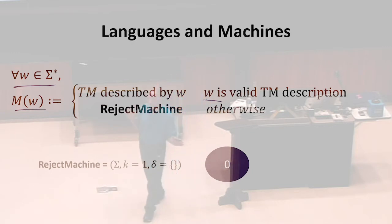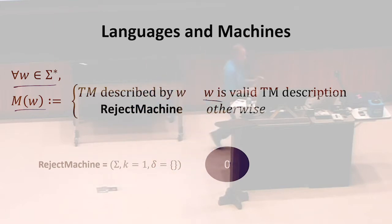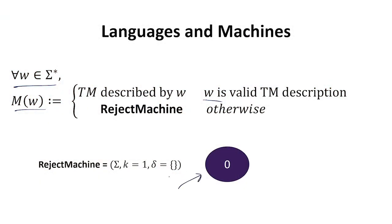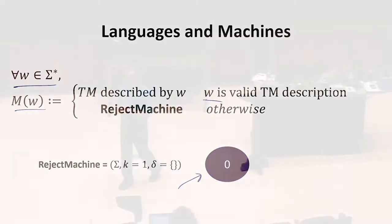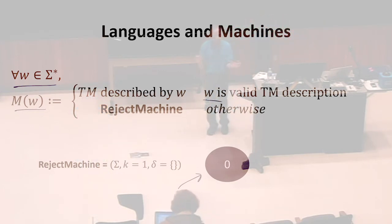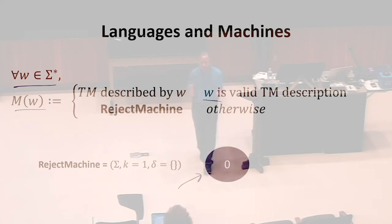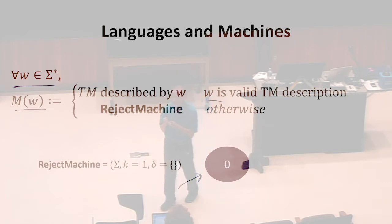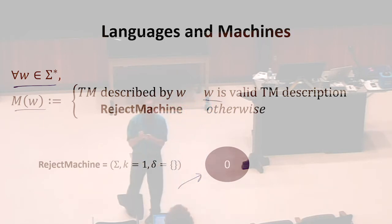If the string is invalid, we're going to produce this special machine — one state, no transitions, empty transition function. What does this machine do? Our rules say we start in state zero, tape index zero, and look up our transition function for what to do next. With this machine, when we look up the transition function — it's undefined.